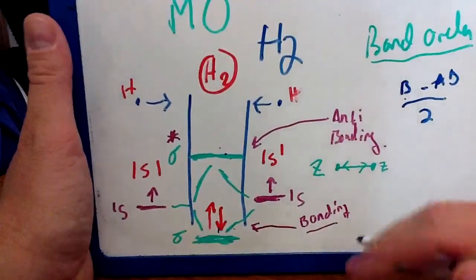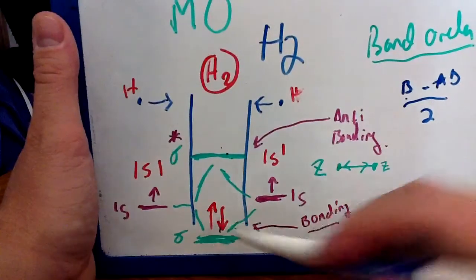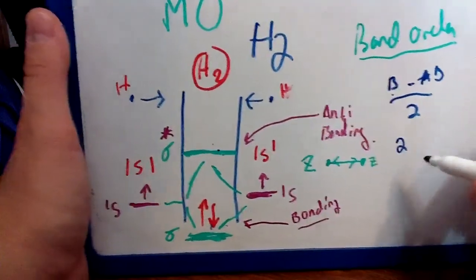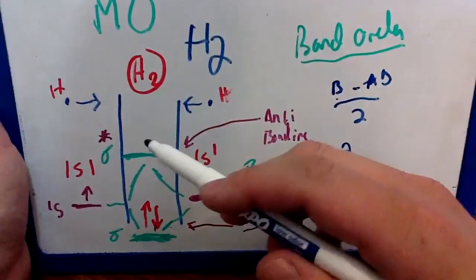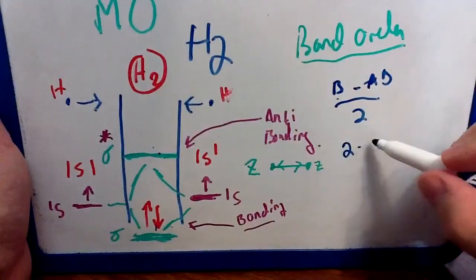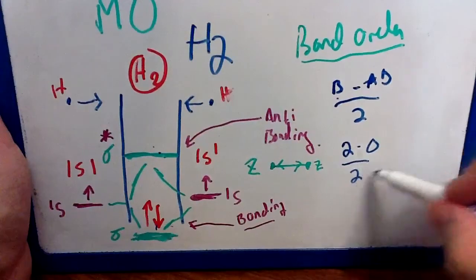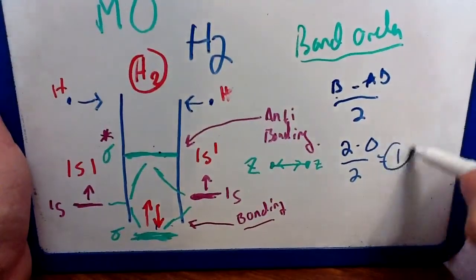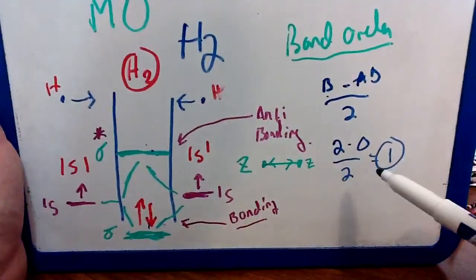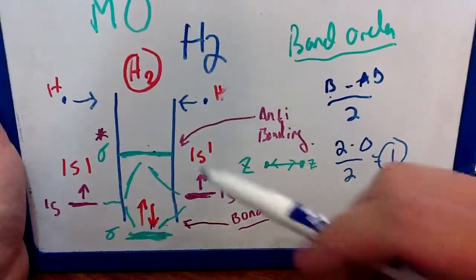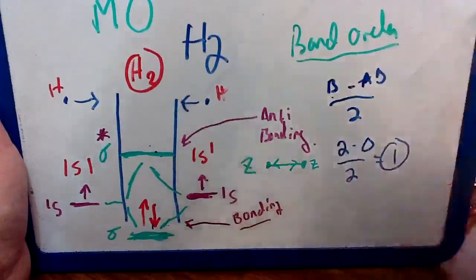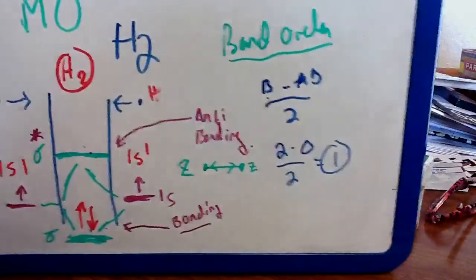So let's see what happens with hydrogen with a bonding order. So I have two electrons in a bonding orbital, two. I have zero electrons in an anti-bonding orbital, subtract zero. And I'm going to go ahead and divide all that by two, and that's going to equal one. So molecular orbital theory predicts one bond, and we know that the H2 molecule is only one covalent bond.